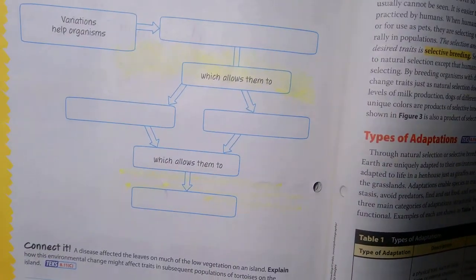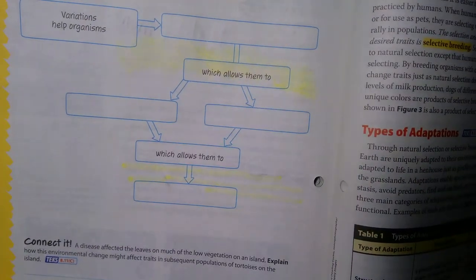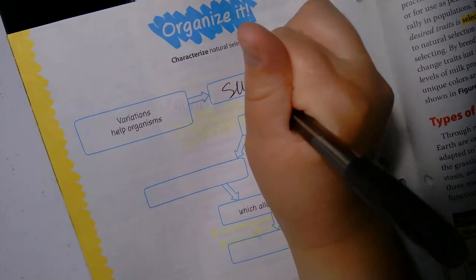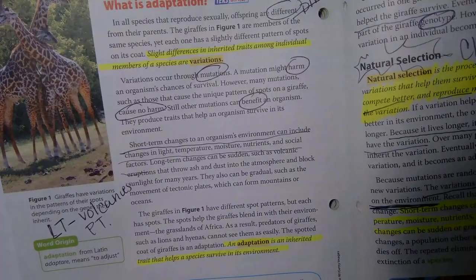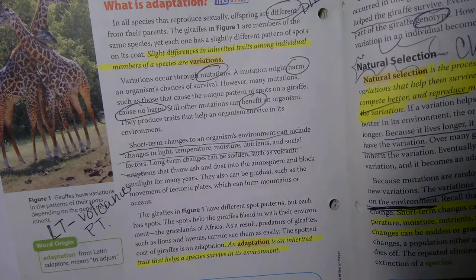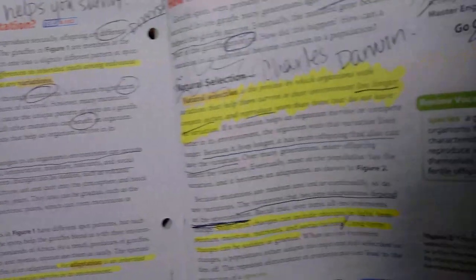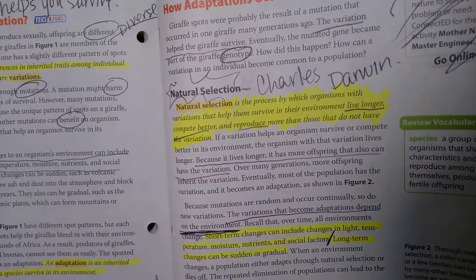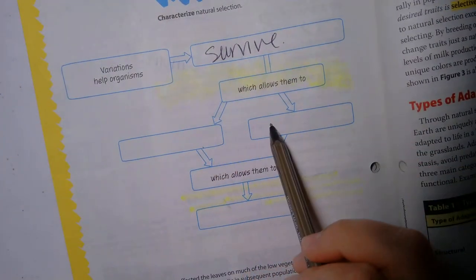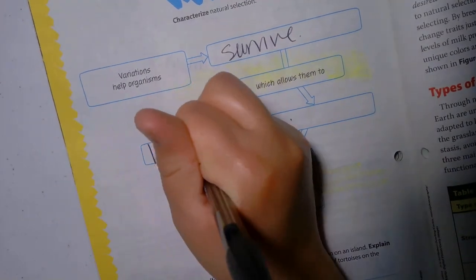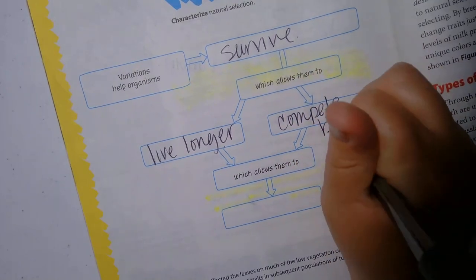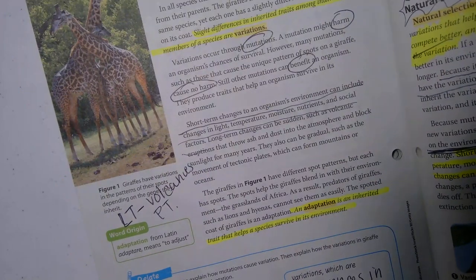Page 5.48: variations help organisms survive. From the reading, variations help you live longer, compete better, and reproduce more — which allows them to reproduce more. That's natural selection.